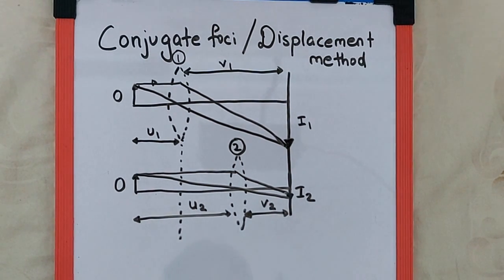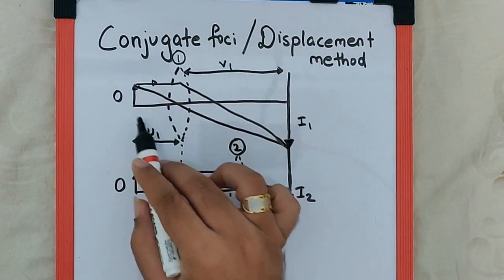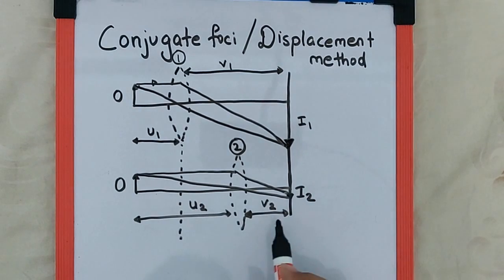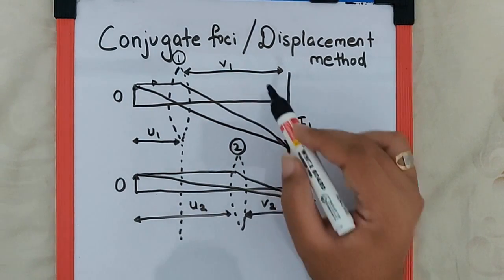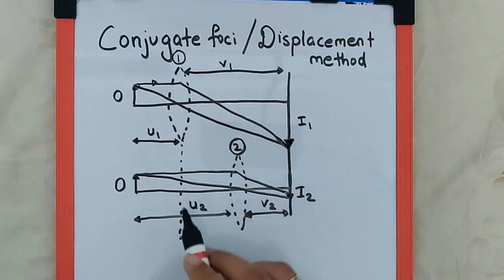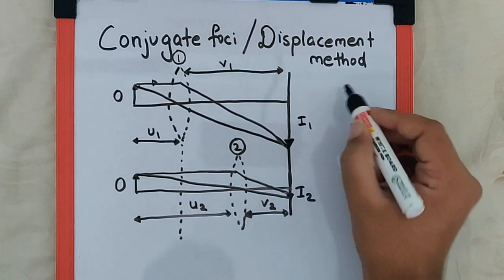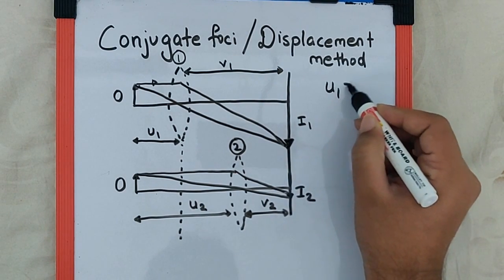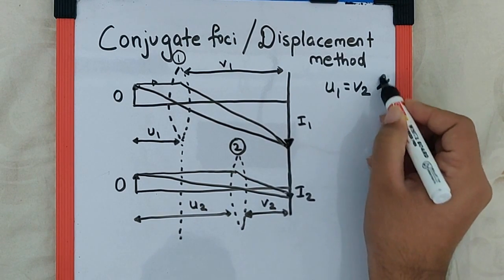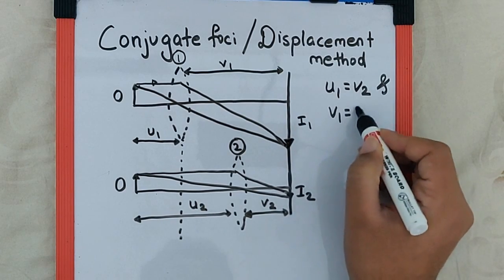But if you do this practically, you will find that the first case object distance is equal to the second case image distance, and the first case image distance is equal to the second case object distance, which means U1 equals V2 and V1 equals U2.